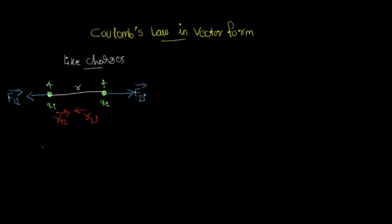We know the equation of Coulomb's law: the Coulomb force between two charges is equal to 1 over 4πε₀ multiplied by Q1·Q2 divided by R squared. Here, we are considering force F12 — the force acting on Q1 due to Q2 — which equals 1 over 4πε₀ multiplied by Q1·Q2 divided by R21 squared, where R21 is the distance from Q2 to Q1.